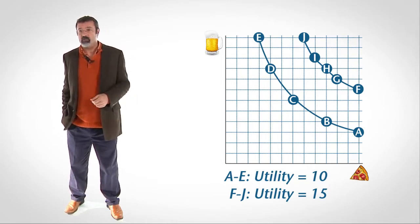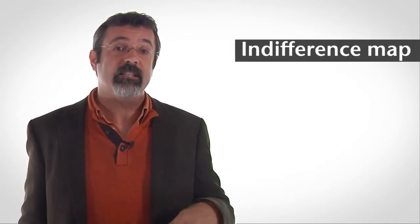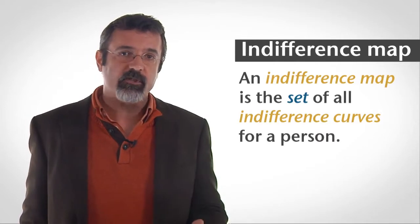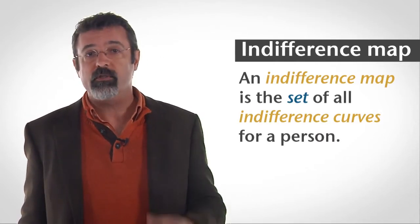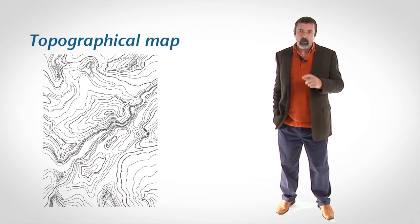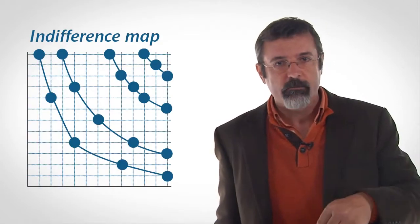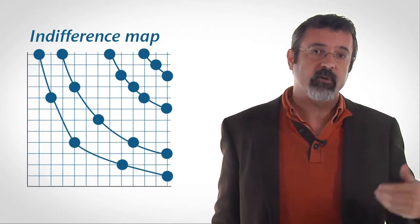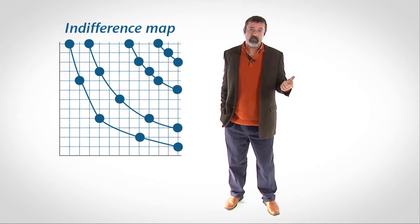You have an infinite number of indifference curves, and all of them taken together are called an indifference map. The shape of the indifference map tells everything there is to know about a person's preferences regarding the two products. The indifference curves are arranged like lines on a topographical map — they never cross. On a topographical map, each line represents a different elevation; on an indifference map, each indifference curve represents a different level of utility. The further to the top right the indifference curve is, the greater the level of utility it represents. The indifference map describes a person's desires but says nothing about limitations. In another video, we will look at how to describe a person's limitations using what's known as a budget constraint.